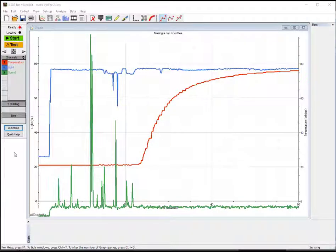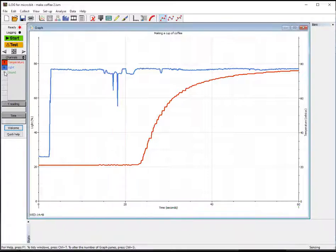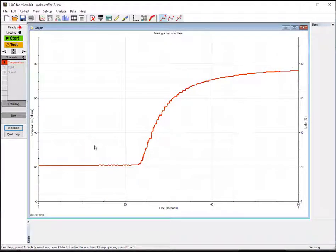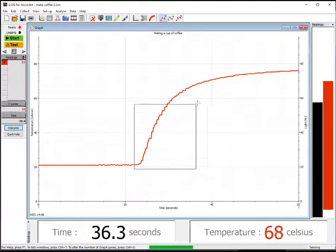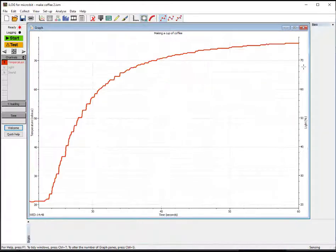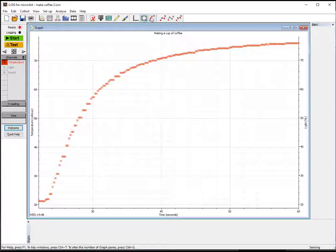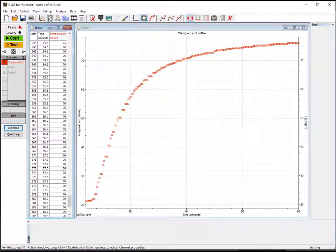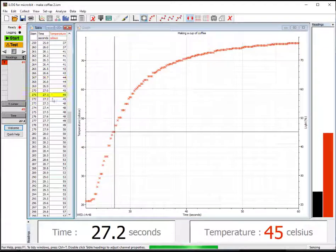When you have collected data, there are many tools for helping you view and analyze the data. You can decide what to show, zoom in on part of the graph, look at individual readings, or see them in a table. You can use a cursor to take values from the graph or the table.